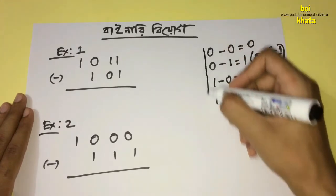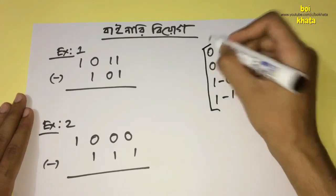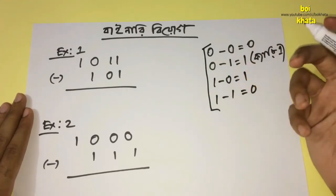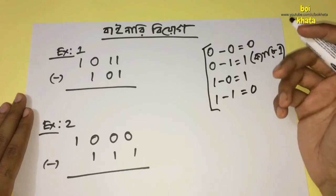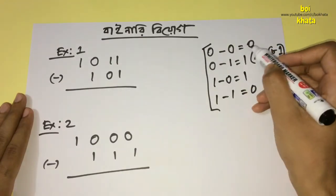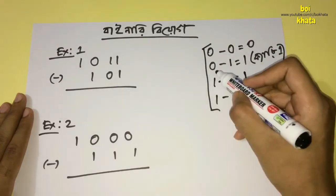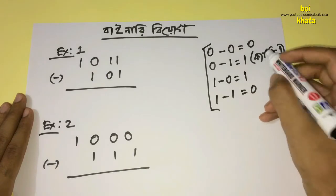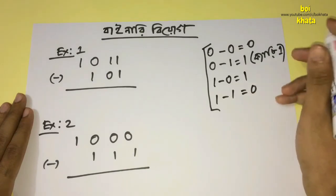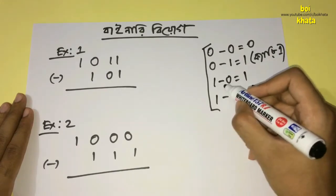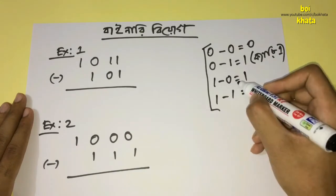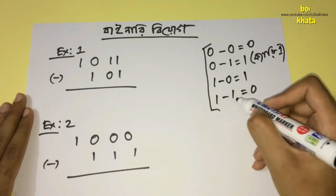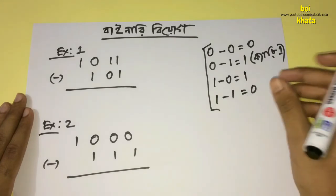So while we have a condition, we have a condition that we have to do this: 0-0 equals 0, 0-1 equals 1, and 1-0 equals 1 equals 0.